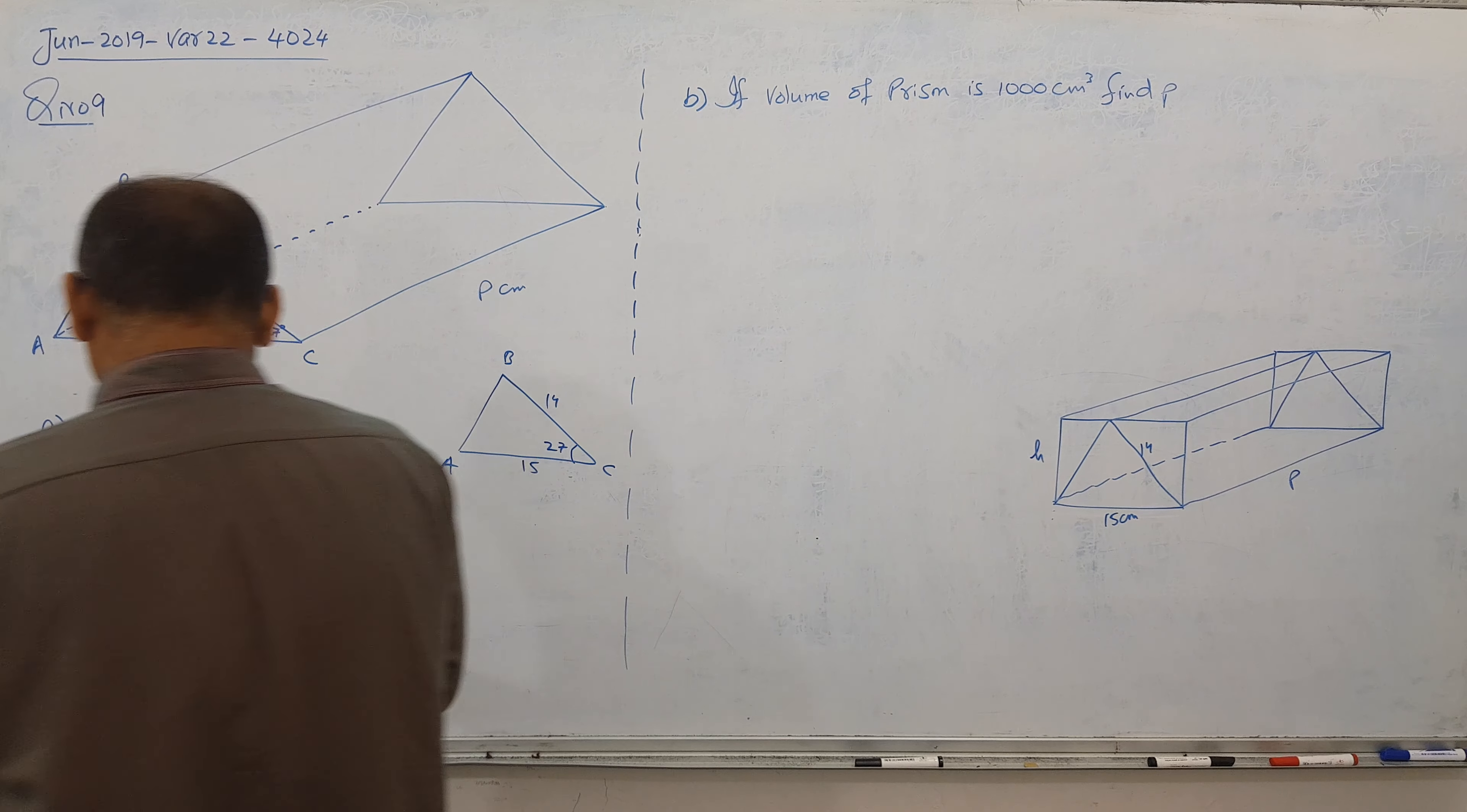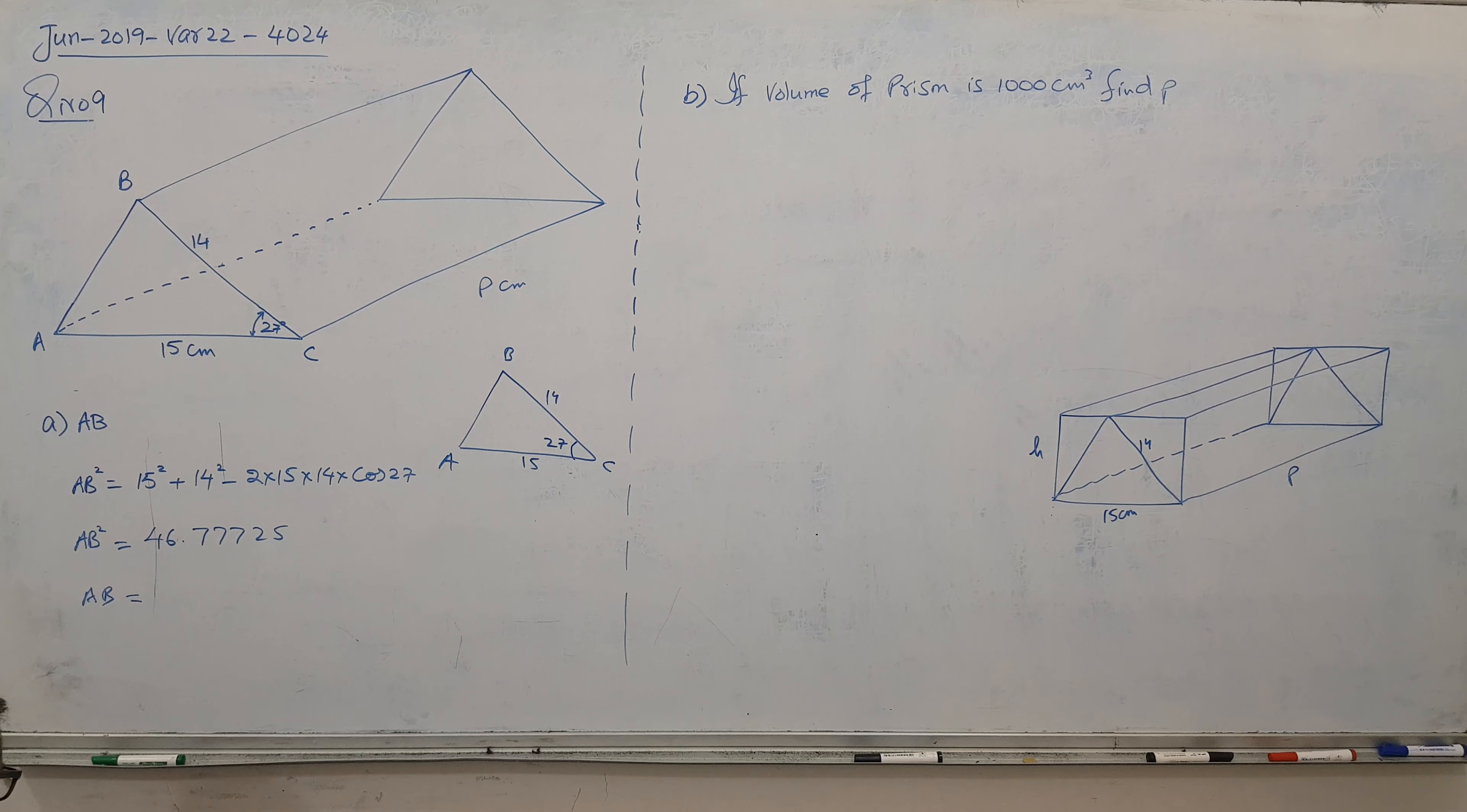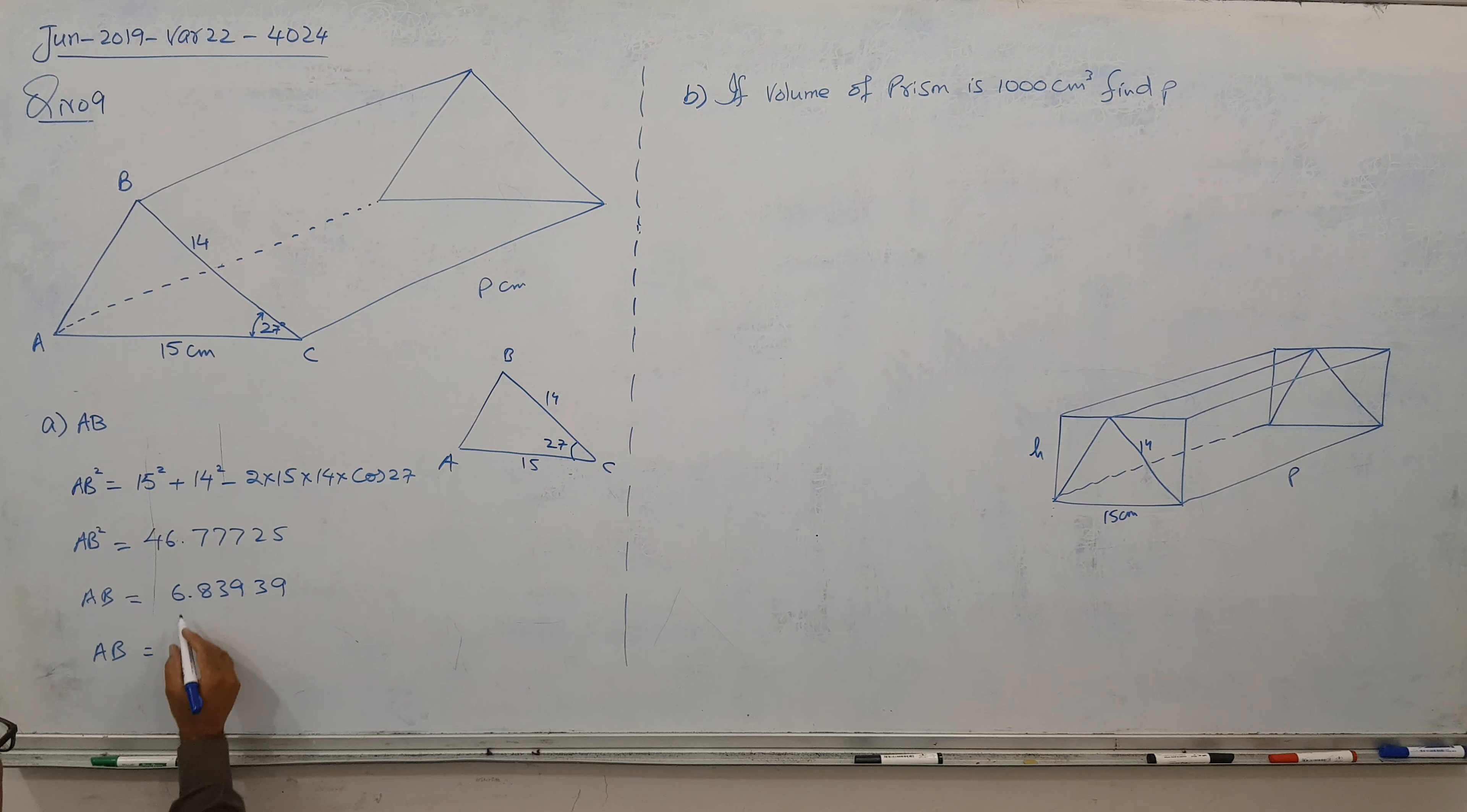Write the exact value, like I mean to say what you got, at least 5 decimal points. And then you take the root of the whole thing, it gives you 6.83939. And then you write 3 significant figures because it's not exact, you have cosine recurring.